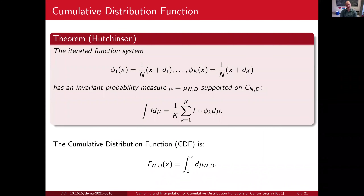The way I think about these cumulative distribution functions is through the corresponding iterated function system. We can define an IFS based on the scale n and the digits we keep, giving us contractions. A theorem of Hutchinson tells us that there is an invariant measure supported on the corresponding Cantor set C_{n,D}, and I denote the invariant measure by μ_{n,D}. This invariant measure is supported on the Cantor set, satisfies the invariance condition, and the CDF is really the cumulative distribution function of that measure.